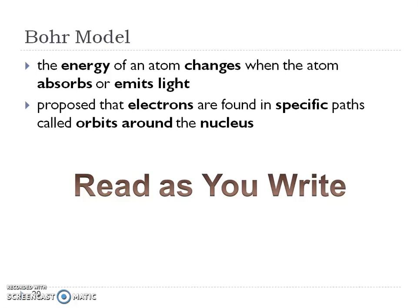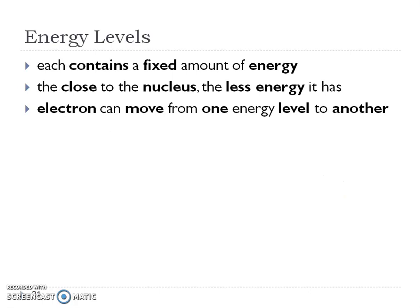So he proposed that these electrons are really found in specific paths, or he called them orbits around the nucleus. So because he can quantify how much energy that electron is either absorbing or emitting, he can say that, okay, then that electron has to be at a specific spot. And again, those specific spots, he called them orbitals, but we're going to say that they're energy levels now. So, ha-ha, energy levels. Remember, again, every energy level is going to contain a certain amount of energy.